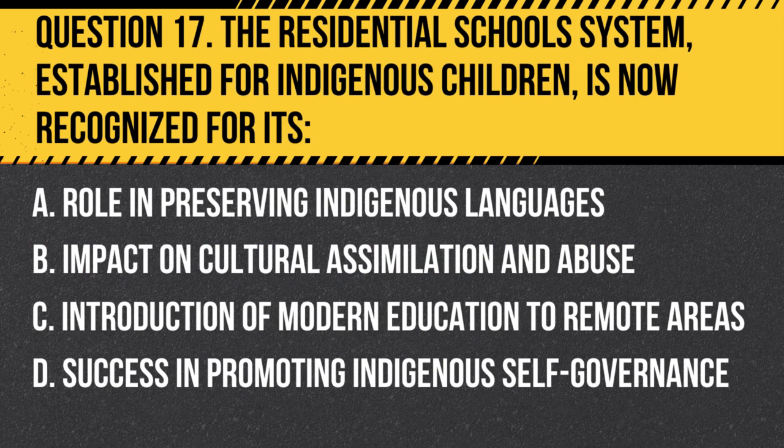Question 17. The residential school system, established for Indigenous children, is now recognized for its: A. Role in preserving Indigenous languages. B. Impact on cultural assimilation and abuse. C. Introduction of modern education to remote areas. D. Success in promoting Indigenous self-governance.